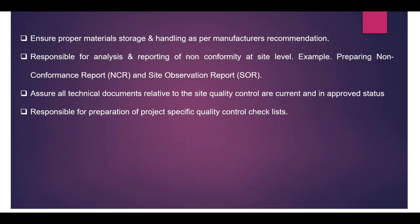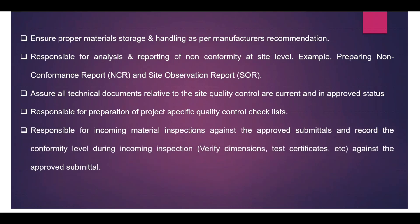You are responsible for the preparation of project quality control checklists — for example, for installation activities, testing, and commissioning. These checklists are normally attached to the method statement, and the site engineer must complete all items. You have to ensure the quality control checklists are properly maintained and followed on site, and are responsible for incoming material inspection against the approved material submittal, recording the conformity level during incoming inspection.